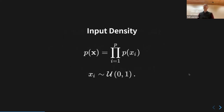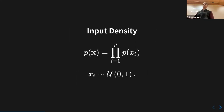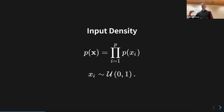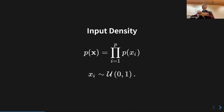The input density can be many things, but what we'll care about is a simple one: we assume an input density that is independent across all dimensions and uniform between zero and one. That's general because we could always scale the inputs to make that zero-one mapping. Conceptually we can think of uniform and independent in each direction — a hypercube with uniform probability across it.